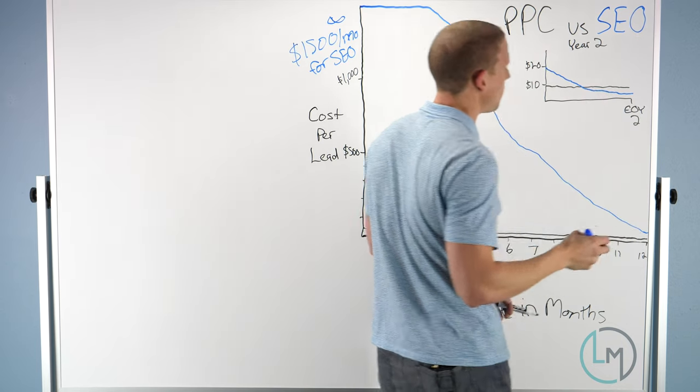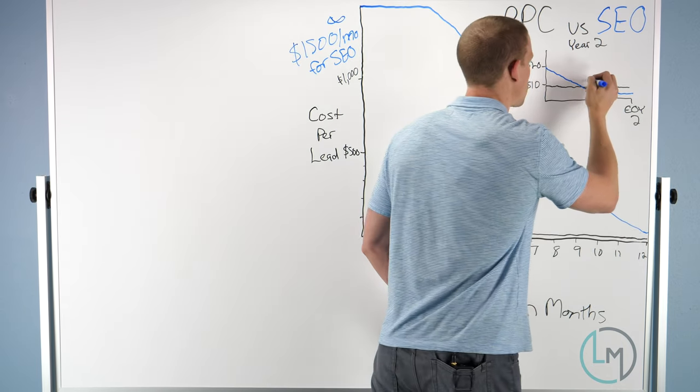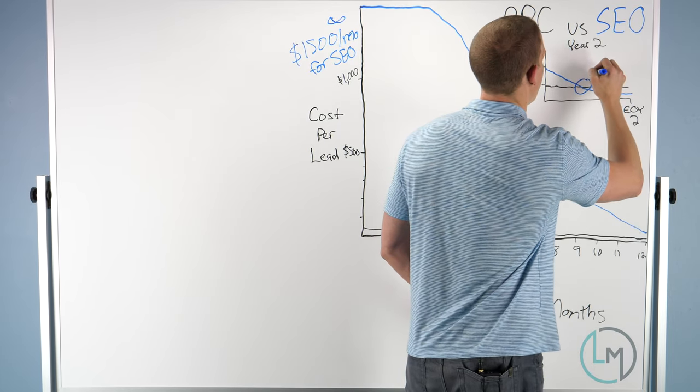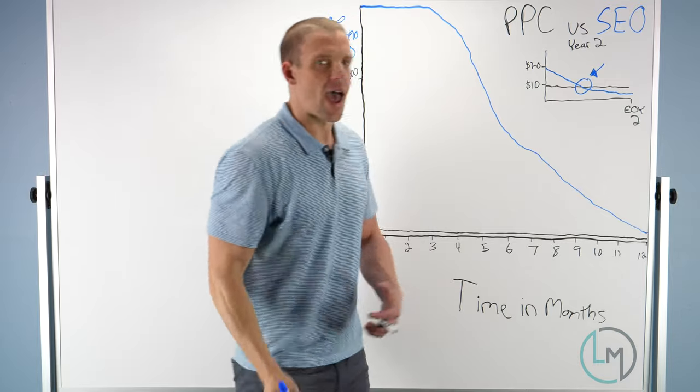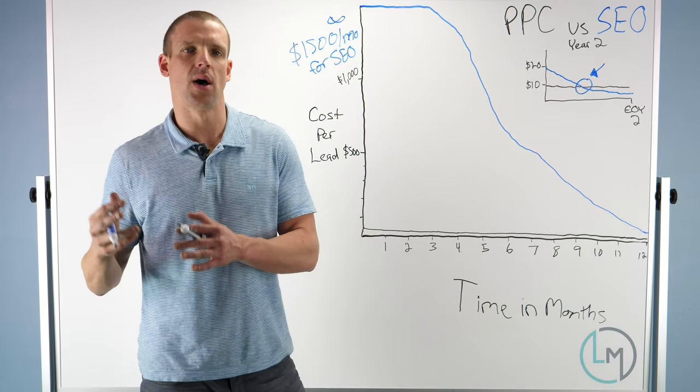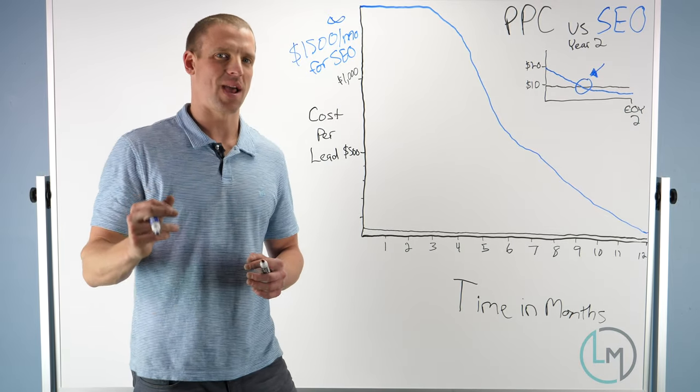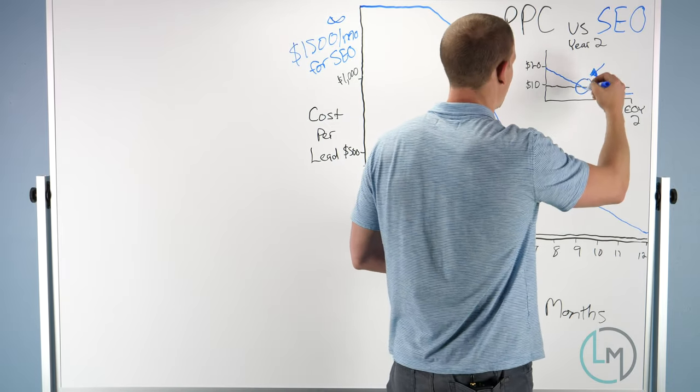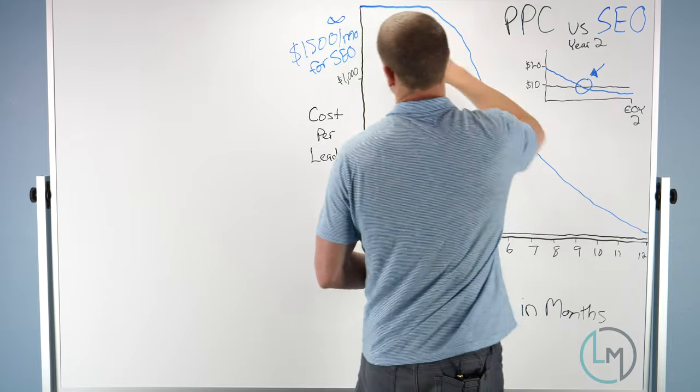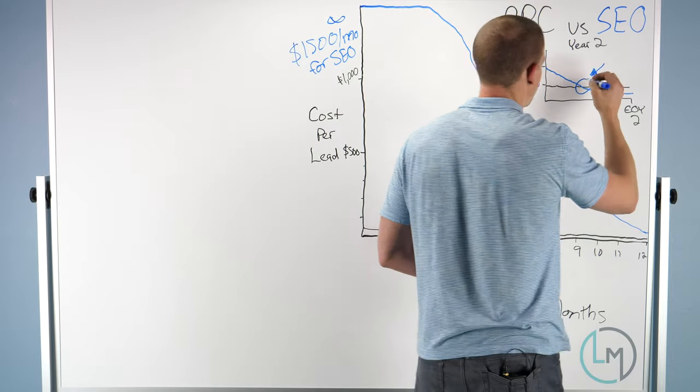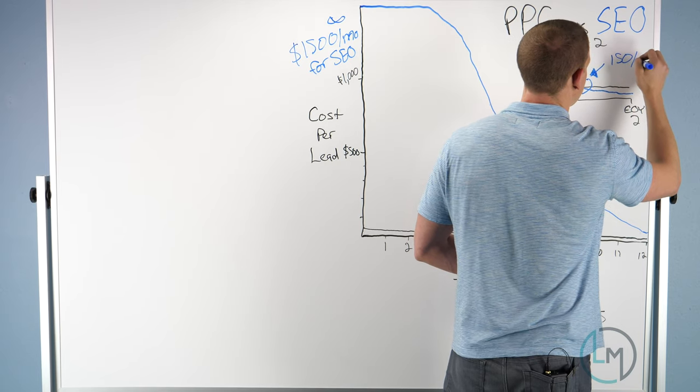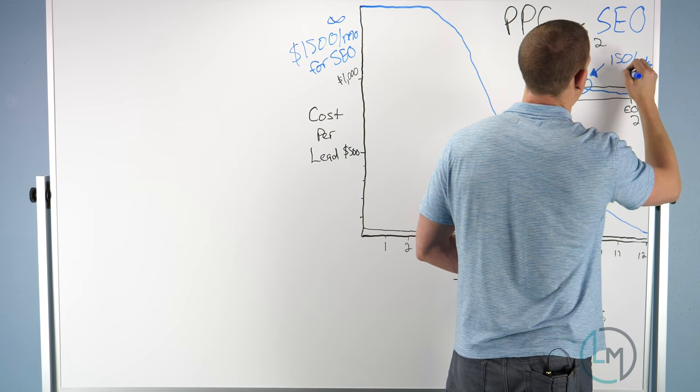Over time—it could be at the one-year mark, it might be at the year-and-a-half mark—eventually there's going to be this point right here, and that is when SEO becomes a lower cost per lead than pay-per-click. This is when your site becomes very valuable. Say you're spending that $1,500 a month, this is when you're getting about 150 leads a month.